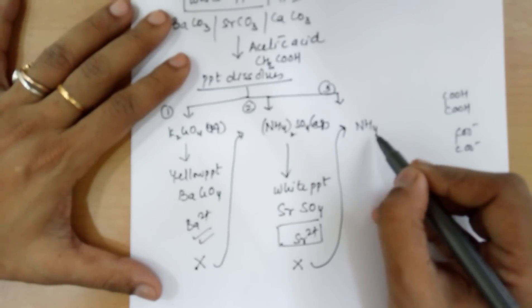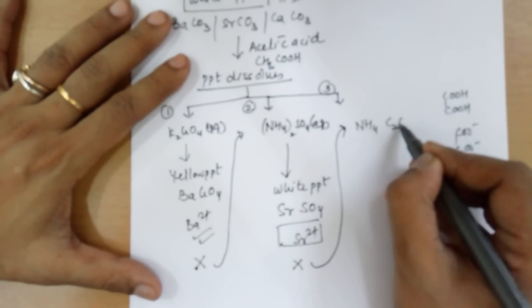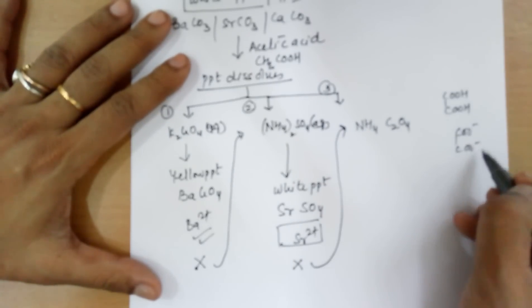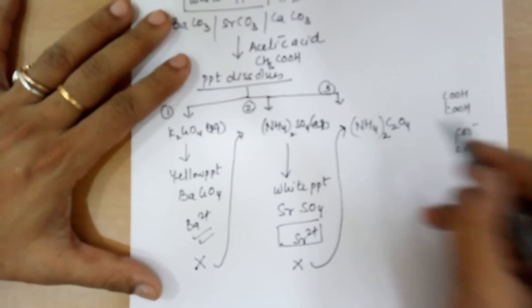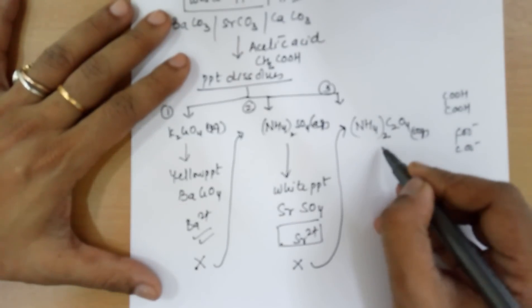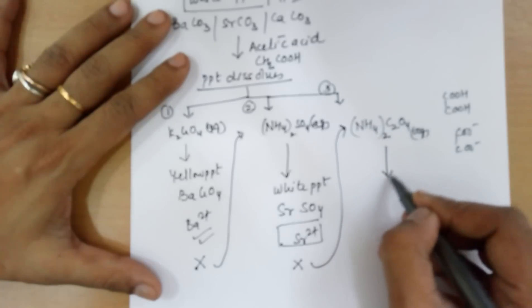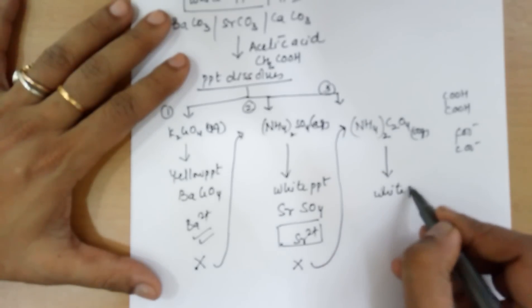Hence, the formula for ammonium oxalate is going to be C2O4 2-. So, the valency in the change, you get ammonium oxalate aqueous solution. Into the third part, you will end up in white PPT this time.